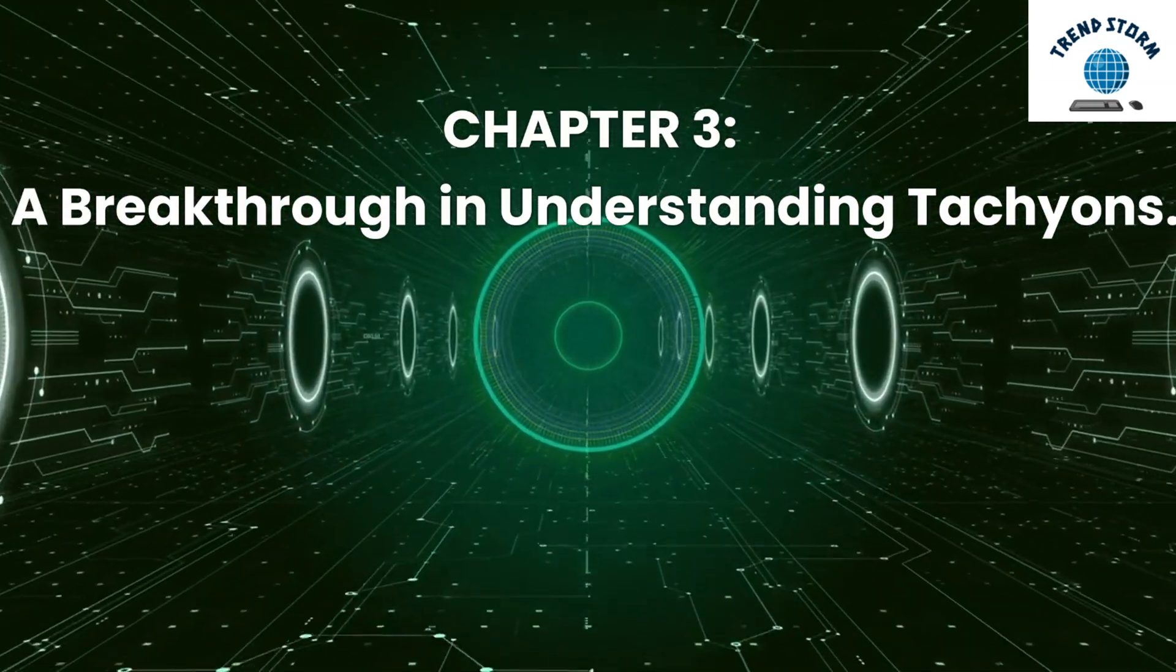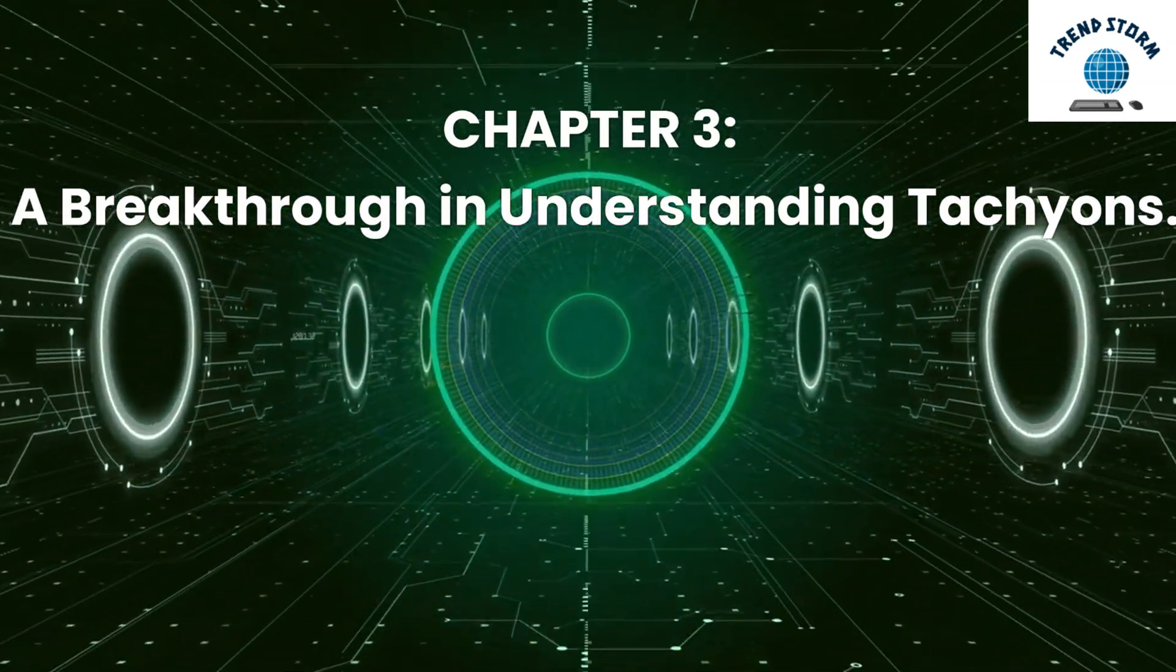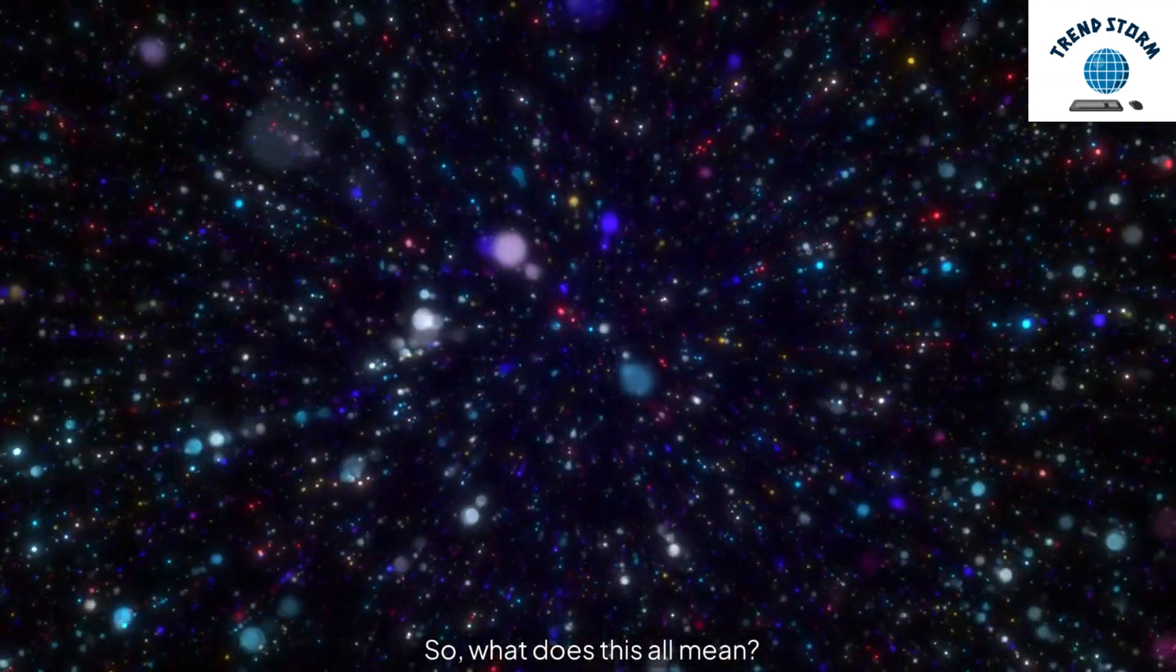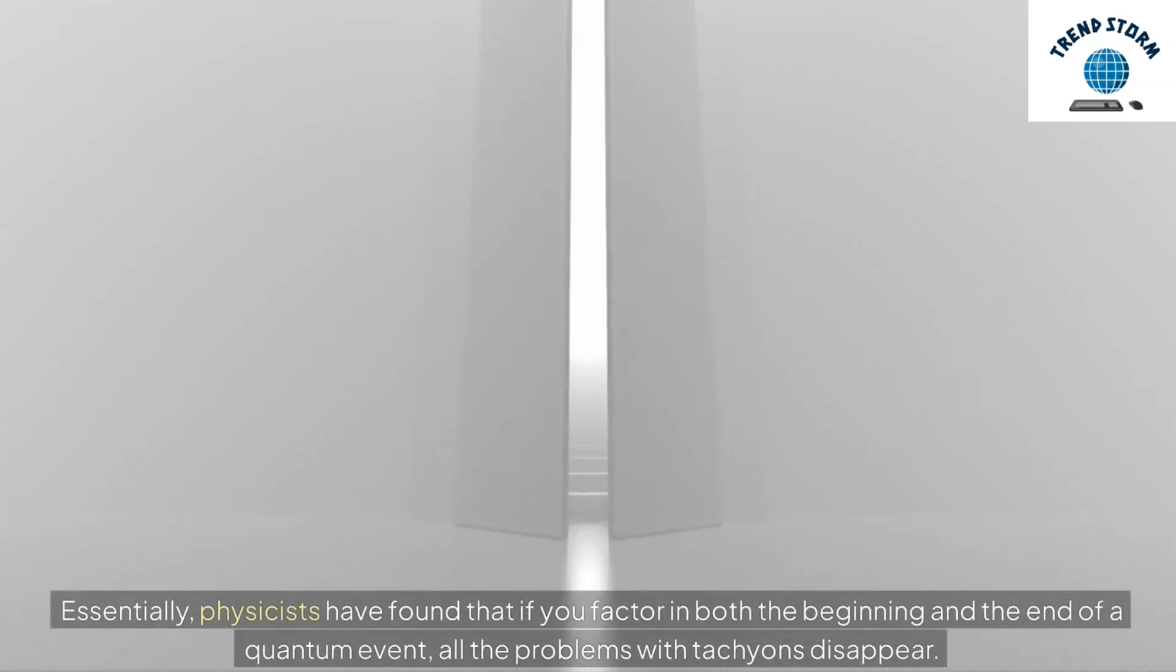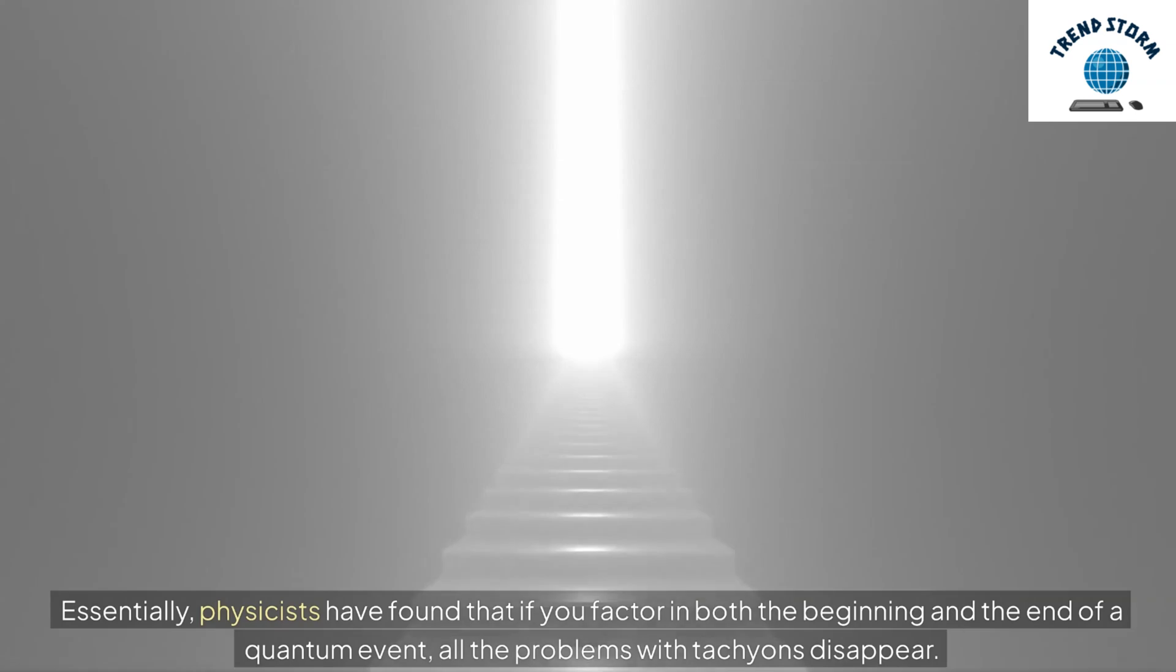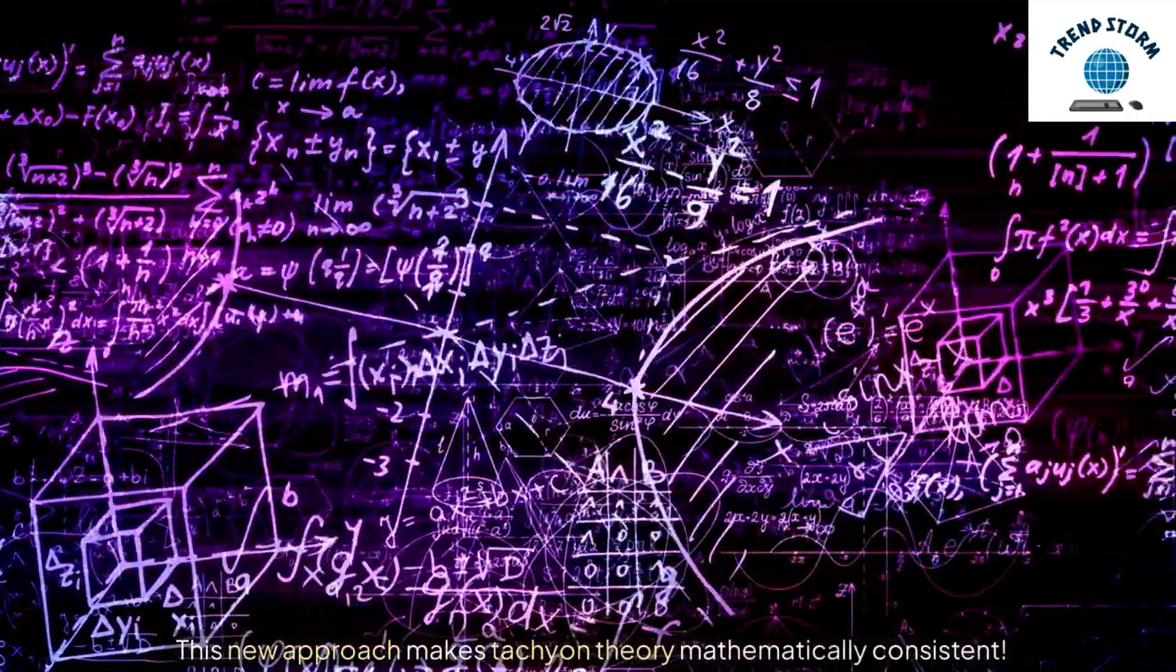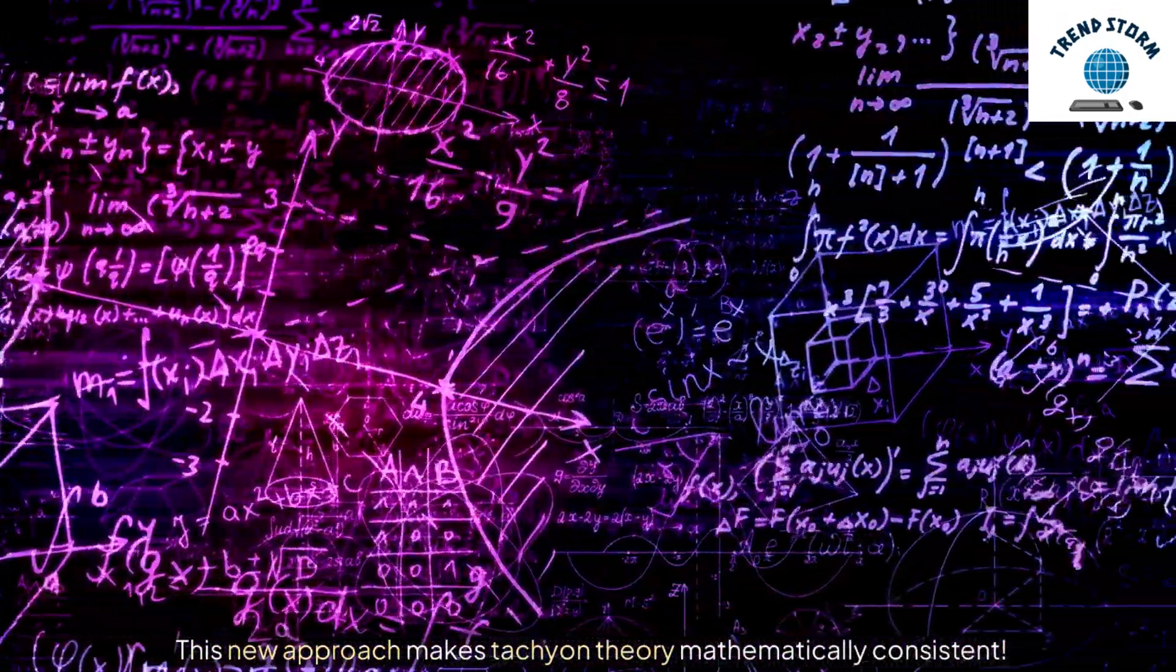Chapter 3: A Breakthrough in Understanding Tachyons. So, what does this all mean? Essentially, physicists have found that if you factor in both the beginning and the end of a quantum event, all the problems with tachyons disappear. This new approach makes tachyon theory mathematically consistent.